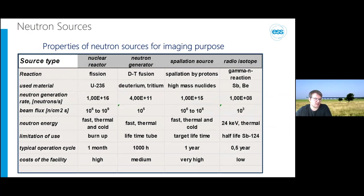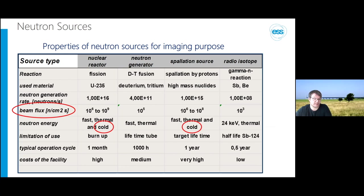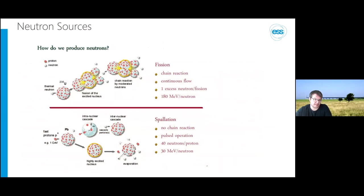Looking at the four types of neutron reactions: for imaging you need a lot of flux and cold or thermal neutrons. Nuclear reactors and spallation sources are the two main sources of choice, though they come at the highest cost. We can produce neutrons either by fission in a nuclear reactor or by spallation, and at spallation sources the time-of-flight concept is very inherent.